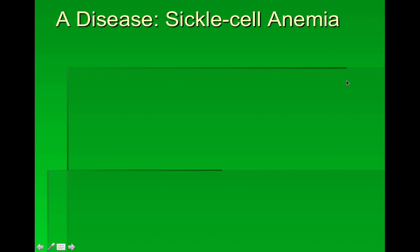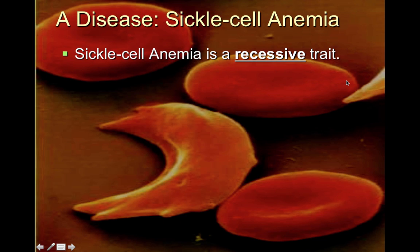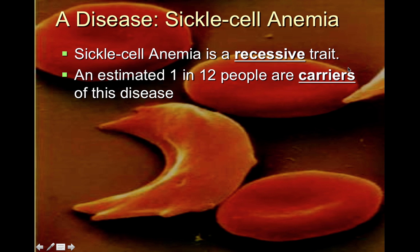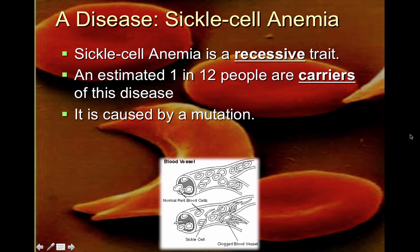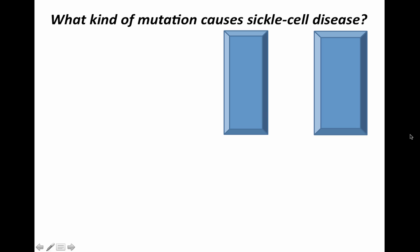This disease is the result of a mutation and is a recessive trait, meaning you need two copies — you must have inherited this particular allele from both of your parents. It's estimated that one in 12 people are carriers. A carrier has one copy of the disease allele and one copy of the normal allele, so they won't have full-blown sickle cell anemia. To have the full disease, both parents must have passed on the diseased allele.